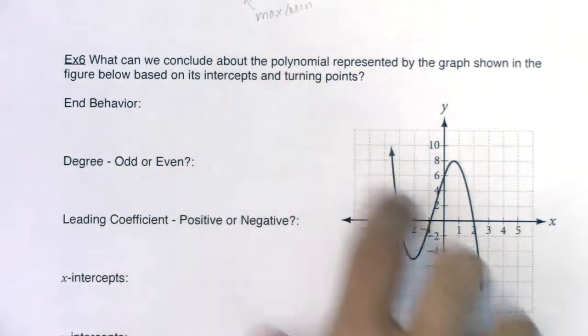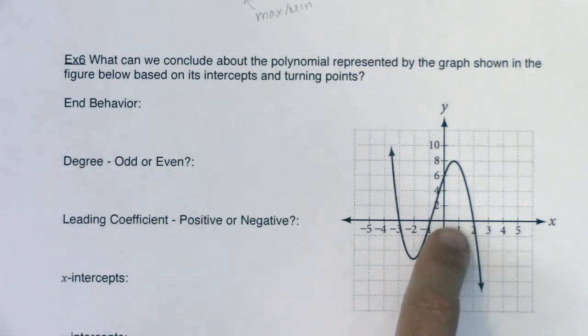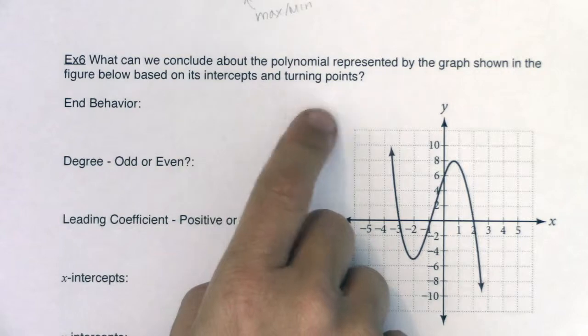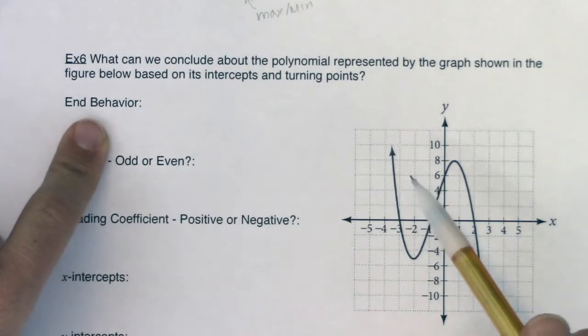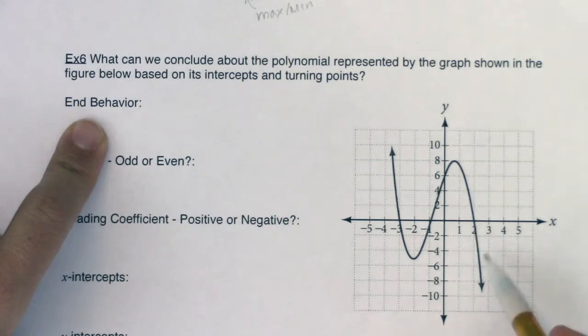What can we conclude about the polynomial represented by the graph shown in the figure below based on its intercepts and turning points? So I could ask you for the end behavior and graphically you can see the end behavior, right?